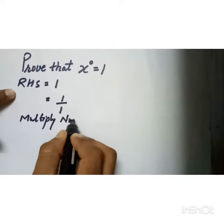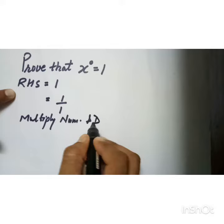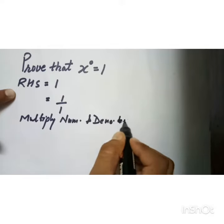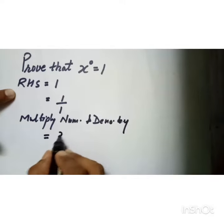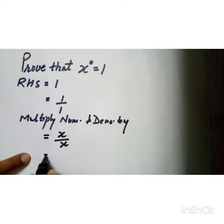...numerator and denominator by x, so it becomes x over x. Now x over x means x to the power 1 over x to the power 1.